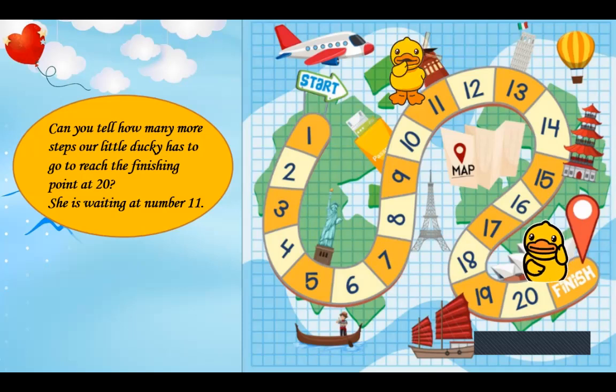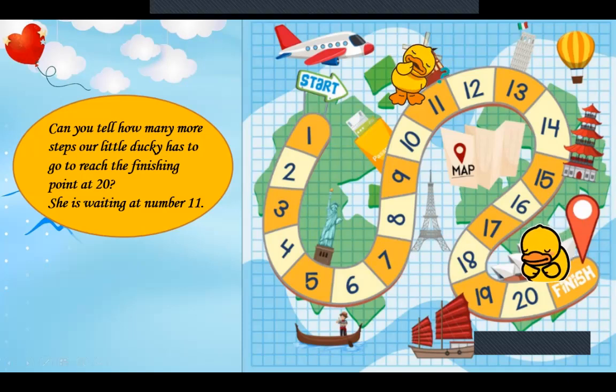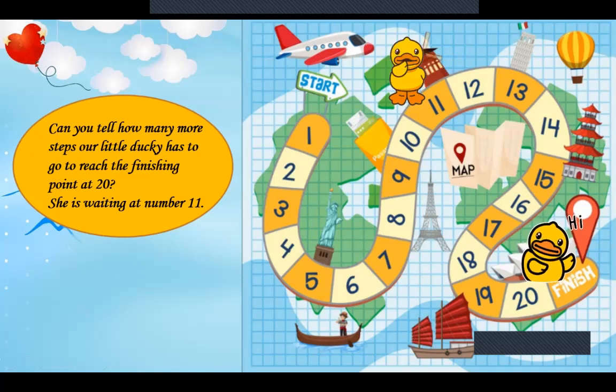Now can you tell how many more steps our little ducky has to go? The little ducky has to reach the finishing point at 20. Now look here, she is waiting at number 11. Can you see the little ducky? Yes, she is waiting at 11. Now she has to reach the finishing point 20. So children, what we will do here? Yes, we have to count forward. From 11 we will count forward.